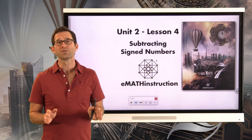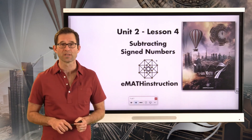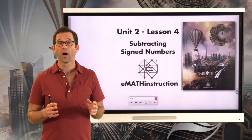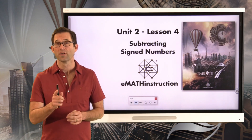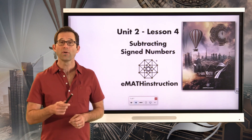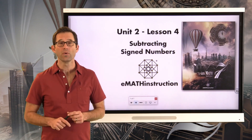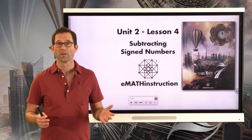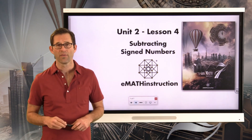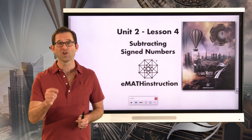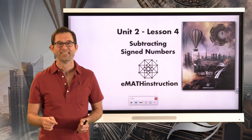Today we saw two things having to do with subtraction. Number one: when we subtract a larger positive from a smaller positive — like two minus 10 — we get the negative of 10 minus two, which is negative eight. Number two: how to subtract a negative by turning it into adding a positive. Eight minus negative two is the same as eight plus two, giving us 10. We're going to use this a lot in future lessons. My name is Kirk Weiler — keep thinking and keep solving problems.